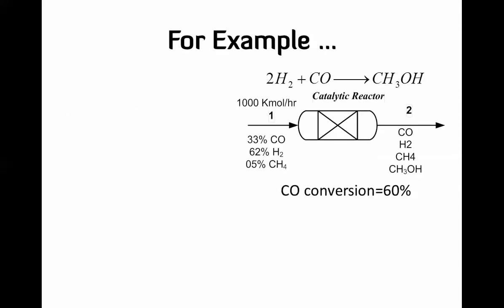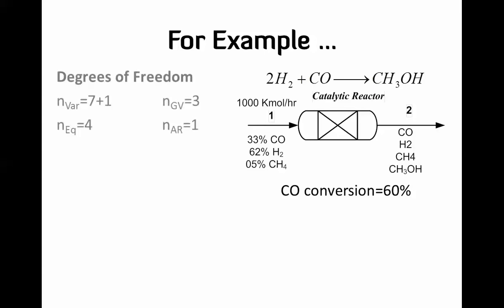Let's look at the reactor case where hydrogen is reacting with carbon monoxide to produce methanol. We know the flow rate and composition of the feed stream, we have four components in the product, and we know that the conversion of carbon monoxide is 60%. For the degrees of freedom: we have three variables in the feed and four variables in the product — seven variables total. But we have one reaction which adds one more variable r, giving eight variables.